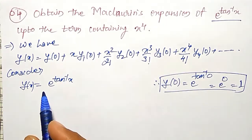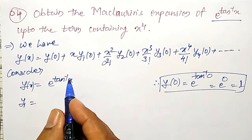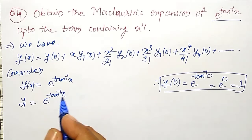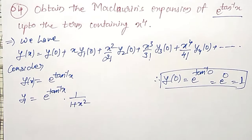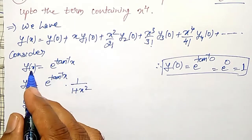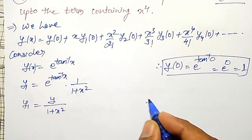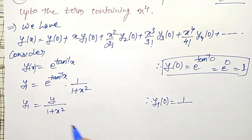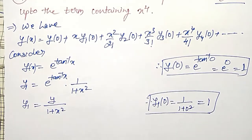To find y1 at 0, I have to differentiate. Differentiating with respect to x we get y1 = e to the power tan inverse of x, into 1 divided by 1 plus x square. Rearranging, y1 = y divided by 1 plus x square. Therefore y1 at 0 = y(0) / (1 + 0²) = 1/1 = 1. So y1 at 0 is also equal to 1.